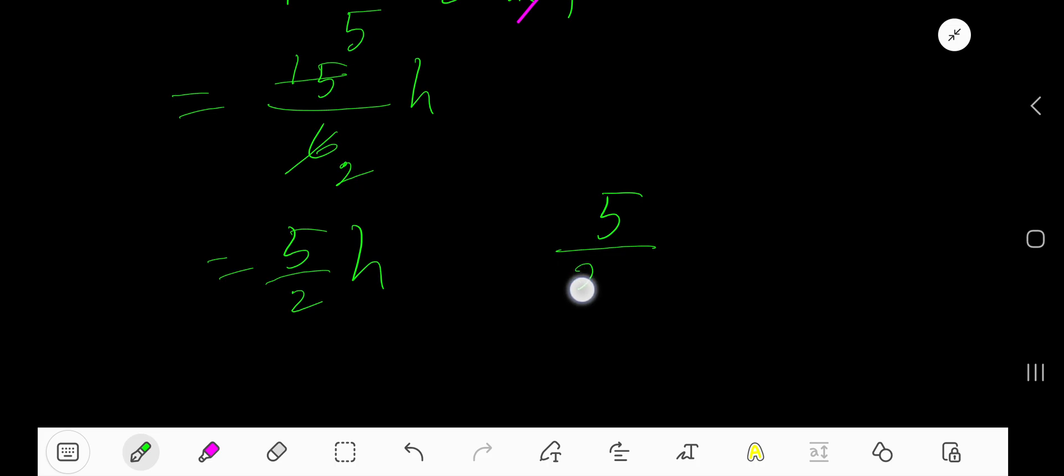To divide 5 by 2, you can multiply by 50 on both the numerator and denominator, so you are getting 250 divided by 100.